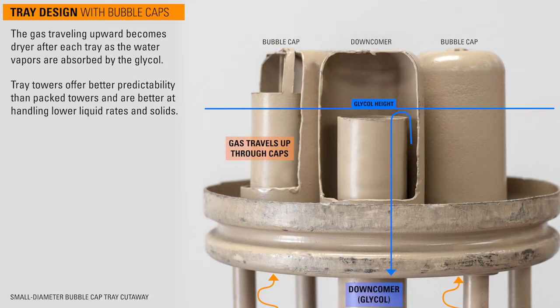Tray towers offer better predictability than packed towers and are better at handling lower liquid rates and solids.